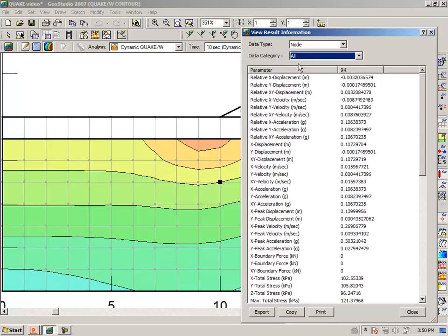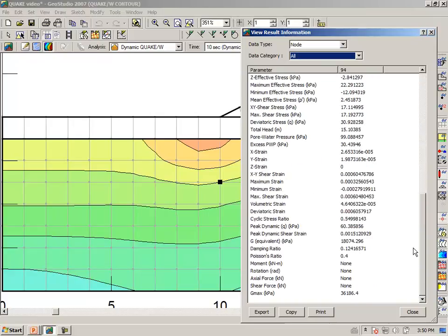Looking at all the information and going near the bottom of the list, we see that the peak dynamic deviatoric stress is 60.38.